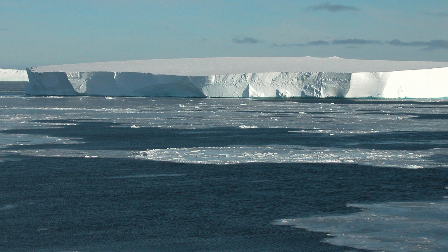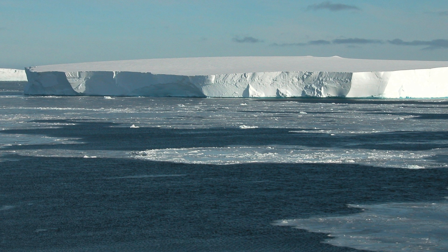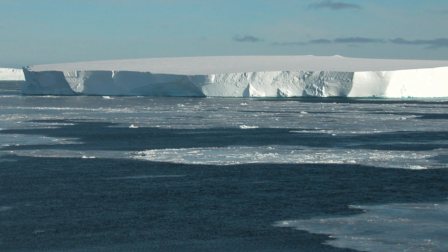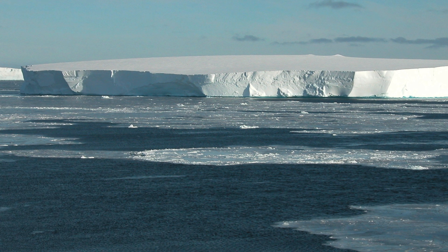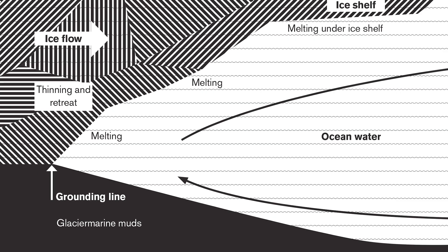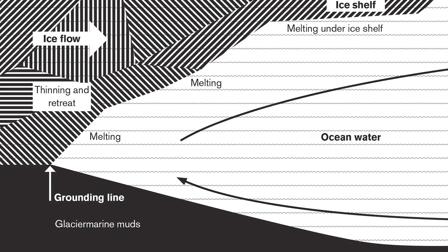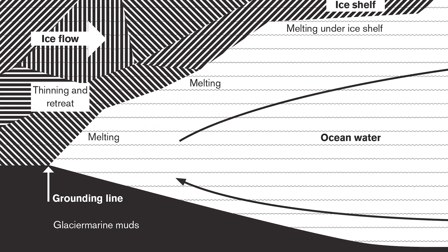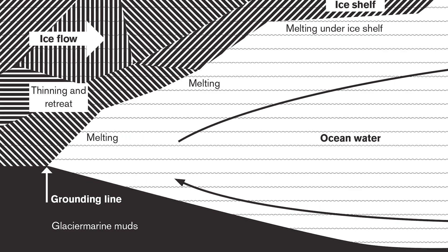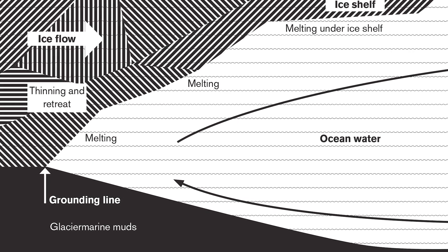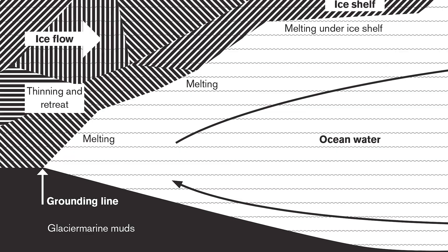Mapping the position of these ridges shows us the places that the ice reached during the past and can tell us about the speed and style of deglacial retreat. The third type of landform are curvilinear chaotic scours into the sea floor, and these are produced by the grounding of iceberg keels into soft sea floor sediments. These landforms can tell us about the size of icebergs in the past, past oceanographic conditions, and also the position of the front of the ice shelf.